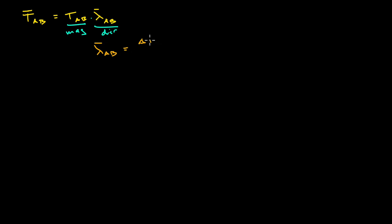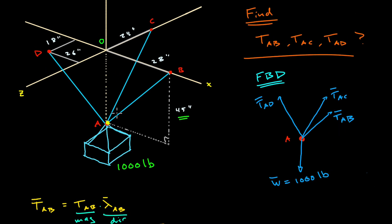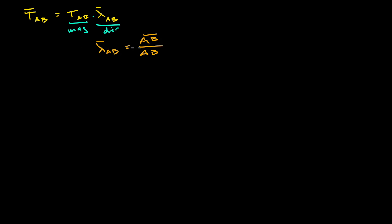To find that unit vector we use the basic definition: in the numerator you have the vector AB, which is the vector that literally points from point A to point B. Now that vector certainly does not have unit length — in fact the vertical component alone is already 45 inches. Because lambda has to be a unit vector, you normalize by dividing by the magnitude of that vector. So in the denominator, AB is just the scalar magnitude or length of that vector. If you use this formula you will always end up with a unit vector that points in the direction of interest.